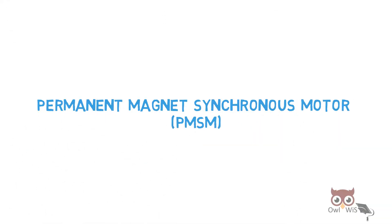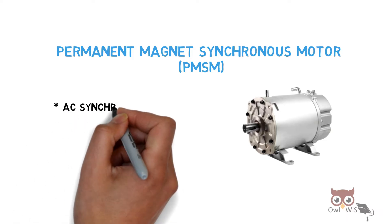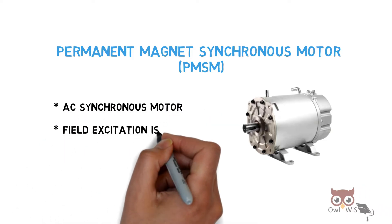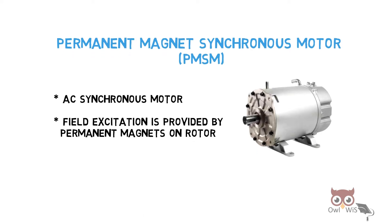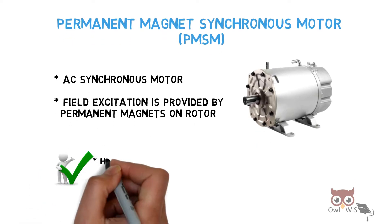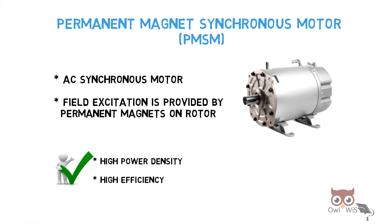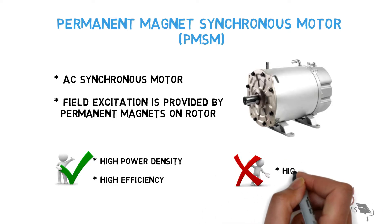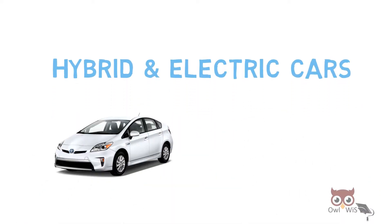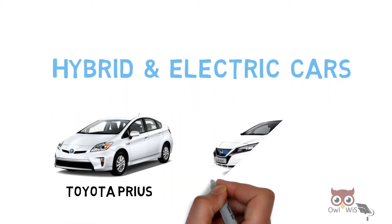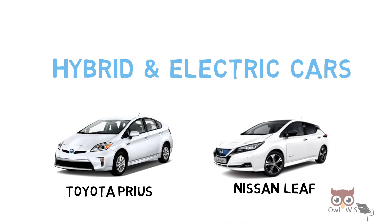Permanent magnet synchronous motors are AC synchronous motors where field excitation is provided by permanent magnets on the rotors. The advantages are high power density and high efficiency. The disadvantage is high cost. These are used in hybrid and electric cars such as the Toyota Prius and Nissan Leaf.